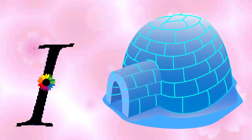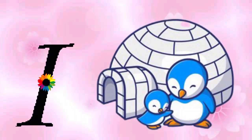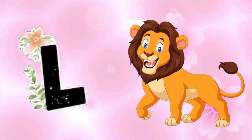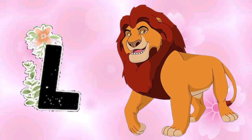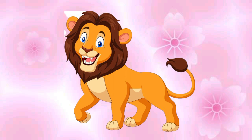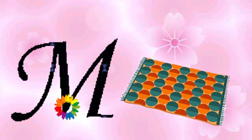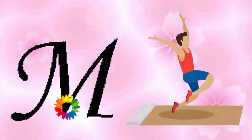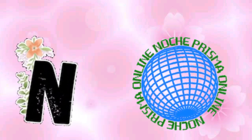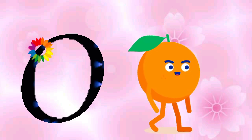I is for igloo, e-i-igloo. J is for jump, j-j-jump. K is for kangaroo, c-c-kangaroo. L is for lion, l-l-lion. M is for mat, ma-ma-mat. N is for net, na-na-net.